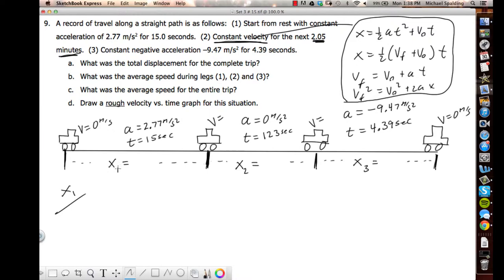How can we find X1, this first displacement? Which kinematic will do it? The first one, one-half AT squared plus V initial T. What's V initial for segment one? Zero, so that goes away. So it's one-half AT squared, one-half the acceleration is 2.77, the time is 15 squared. So X1 is 311.6 meters.